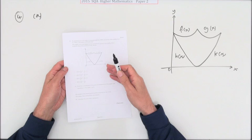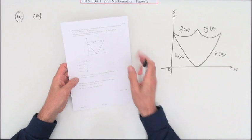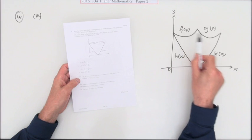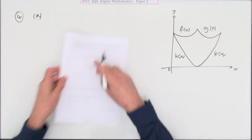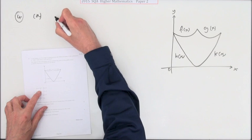Almost as if they're trying to punish schools for sticking with the old Higher when the new Higher was available. Part A asks us to find the x-coordinate of the point of intersection of the graphs with equations f(x) and g(x). That's this point at the top.